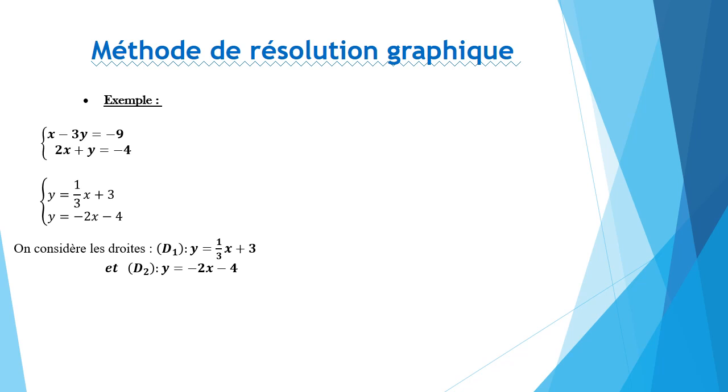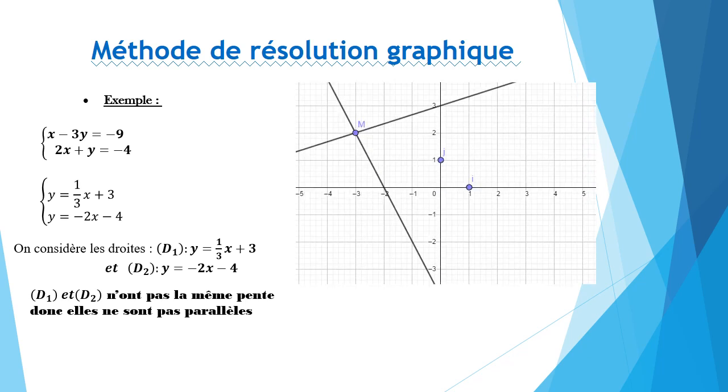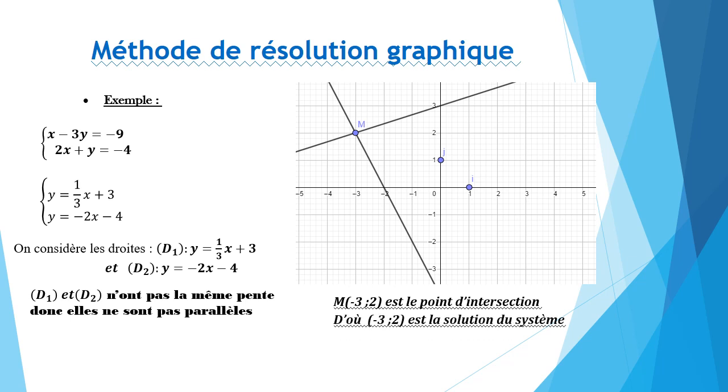On constate que les deux droites n'ont pas la même pente. Donc, on peut déduire qu'elles ne sont pas parallèles. Et lorsqu'on trace ces deux droites dans un repère orthonormé, on peut déterminer les coordonnées de leur point d'intersection qui est nommé ici M. Alors, M a comme coordonnée moins 3, 2. D'où moins 3, 2 est la solution de ce système.